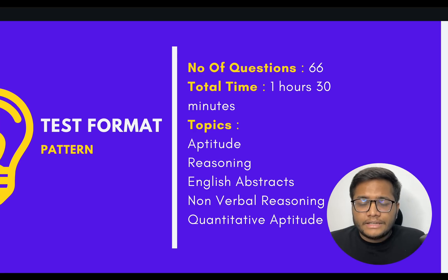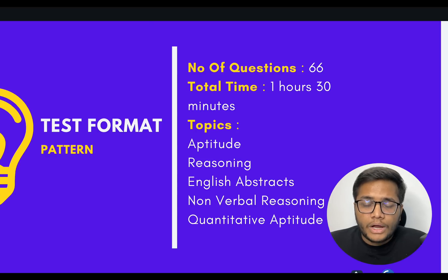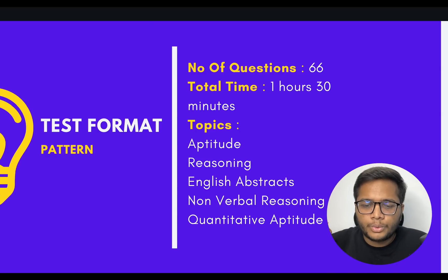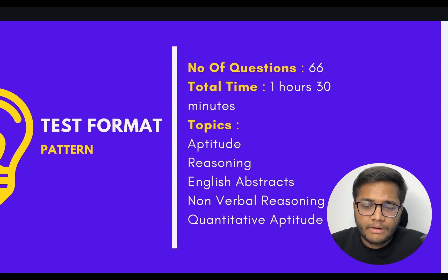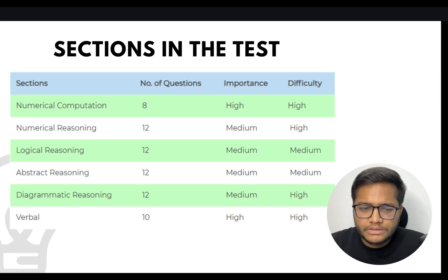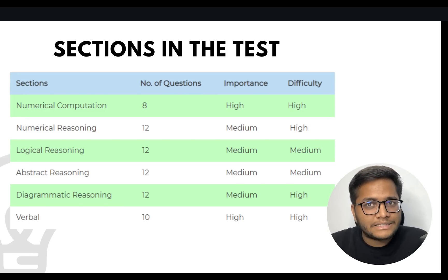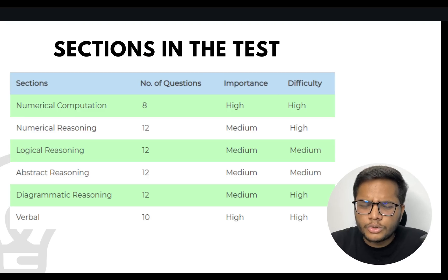The test pattern is like this: there'll be 66 questions, which you need to solve in 1 hour 30 minutes. The topics include aptitude reasoning, English, abstract nonverbal reasoning, and quantitative aptitude. We'll also bifurcate them by section. These are as per previous editions of the Goldman Sachs engineering ambassador program, so tentatively this is the pattern they might follow.